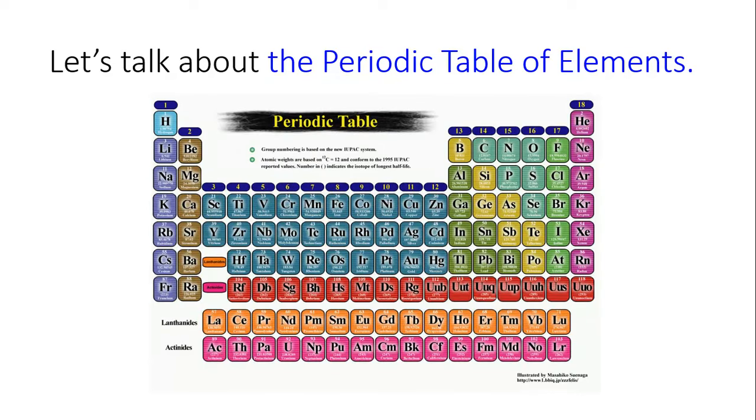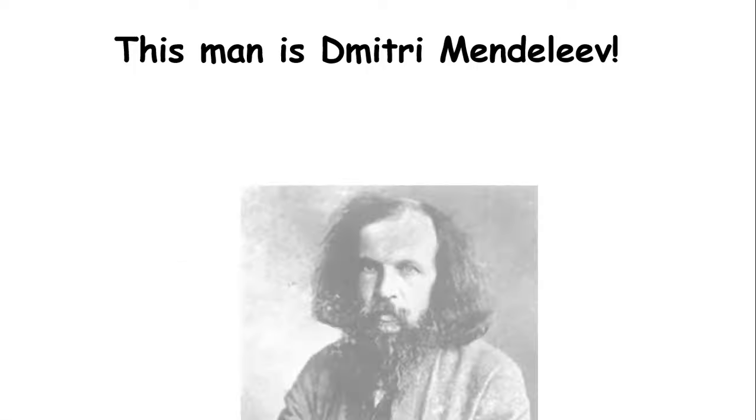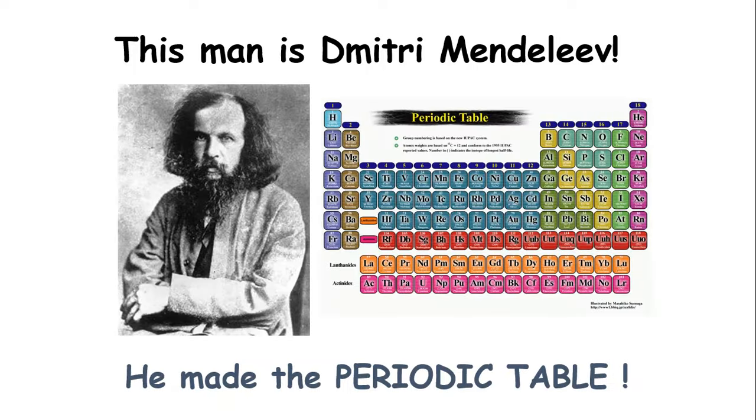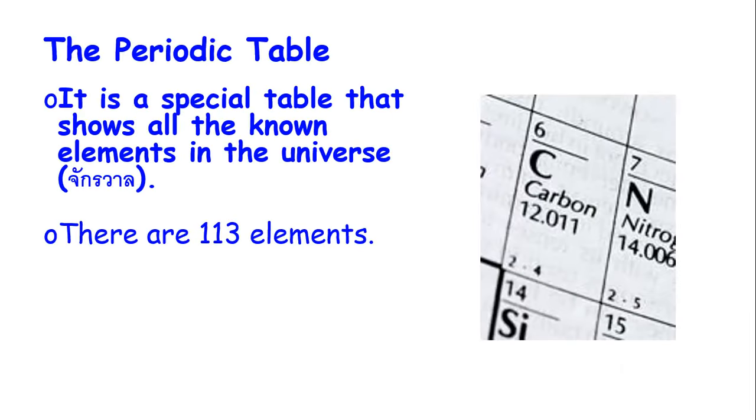Let's talk about the periodic table of elements. You'll all be getting a copy of this in class. This man is Dmitri Mendeleev. He was a Russian scientist that organized all of the known elements into this table. What is the periodic table? It is a special table that shows all the known elements in the universe. There are 113 elements.